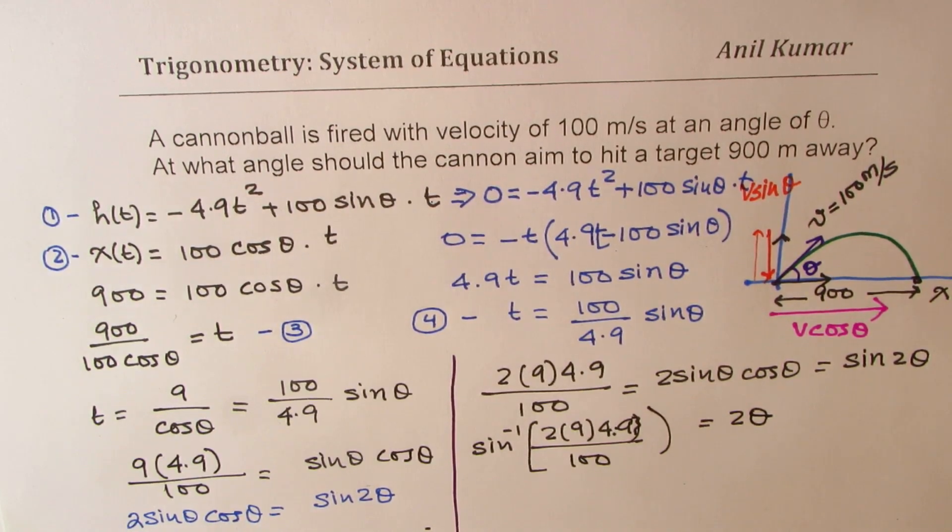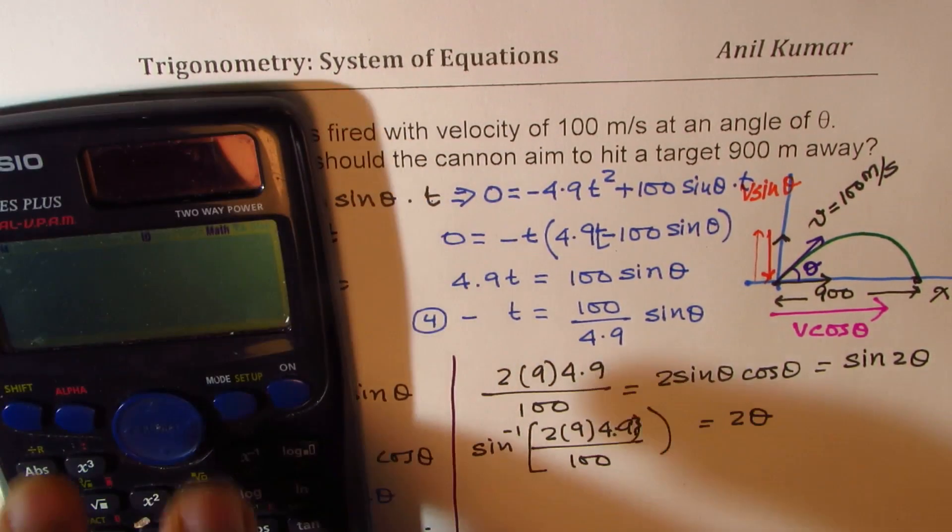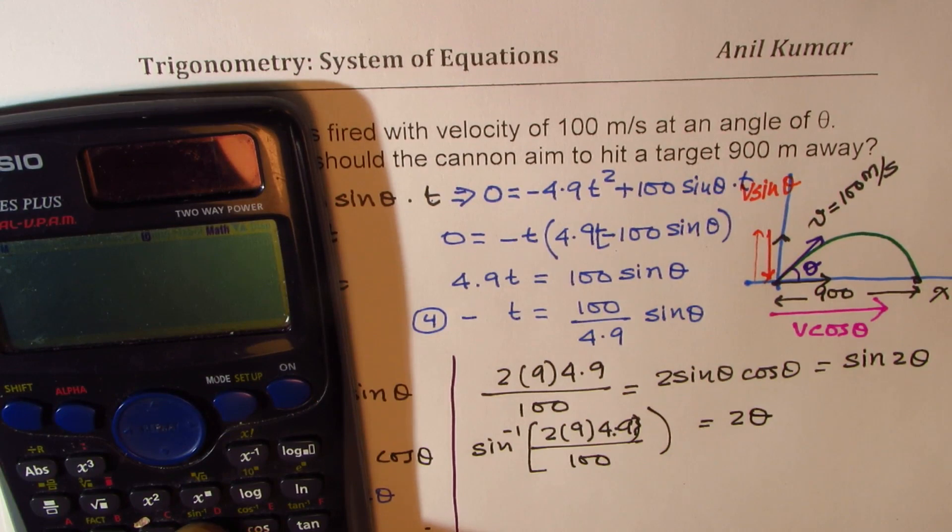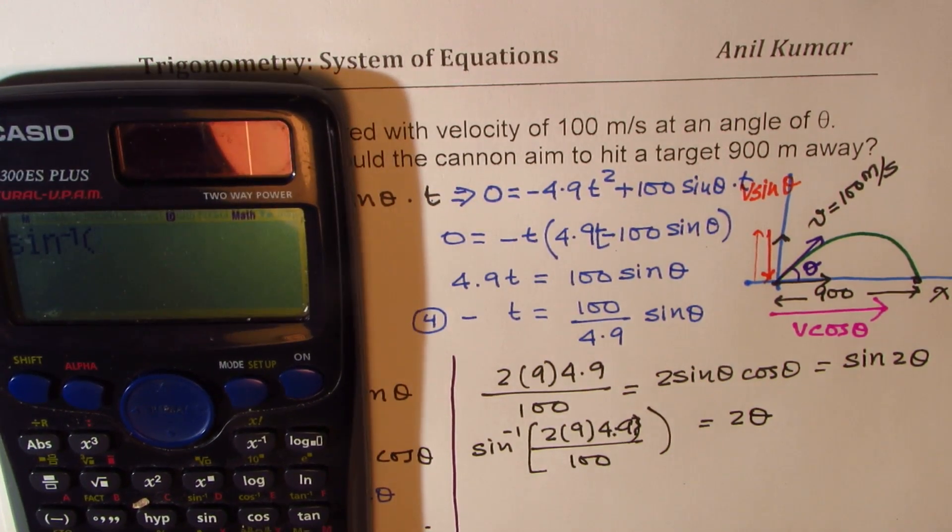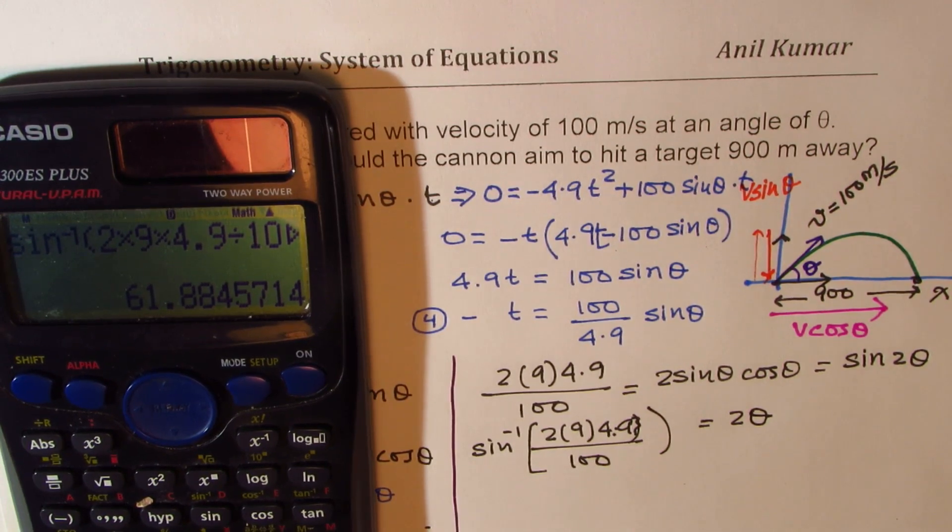So that gives you the answer. So let us use the calculator, we have shift sin inverse, 2 times 9 times 4.9 divided by 100 equals to, so we get 61.88.